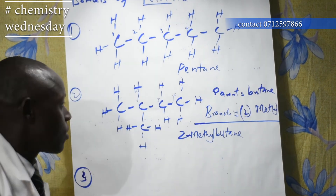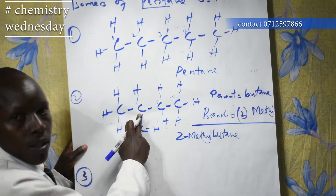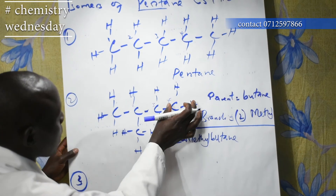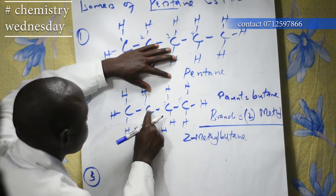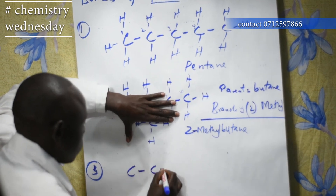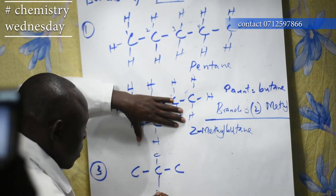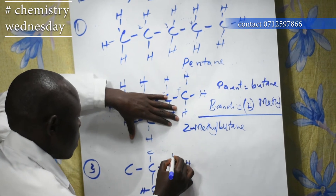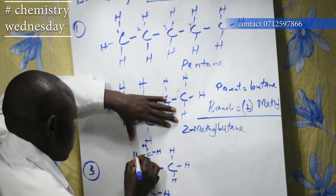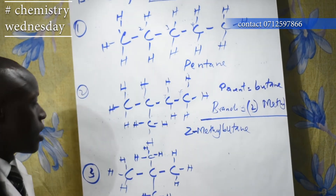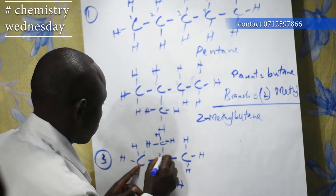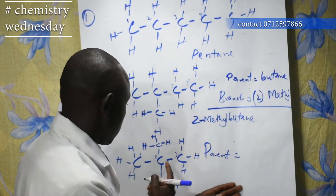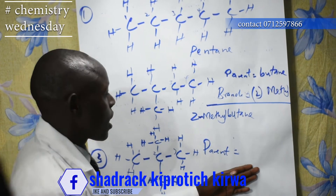Number 3: we can still take the last carbon, bring it to carbon number 2 of a 3-carbon chain, so you have 1, 2, 3 as the longest chain with a branch at carbon 2. Then you also bring another carbon to carbon 2. So you have 3 carbons in the longest chain with two CH3 branches both at carbon number 2. The parent is 3 carbon atoms — called propane.